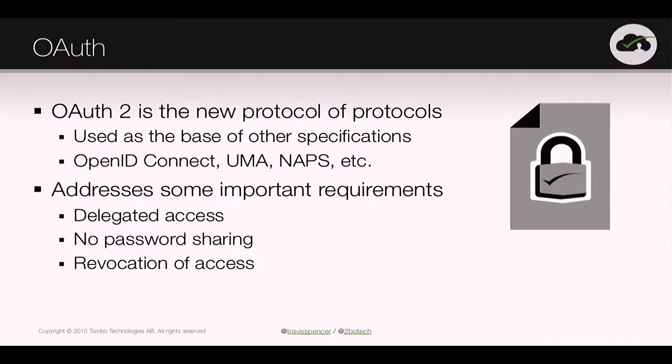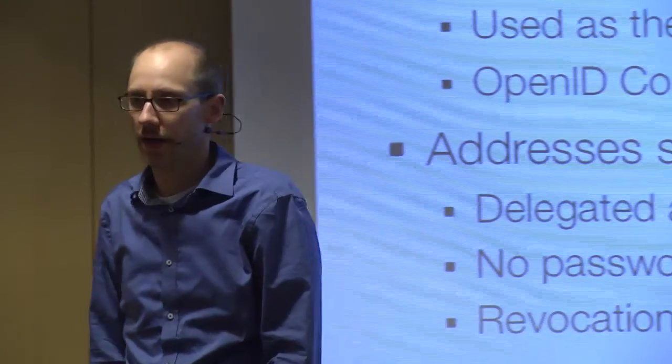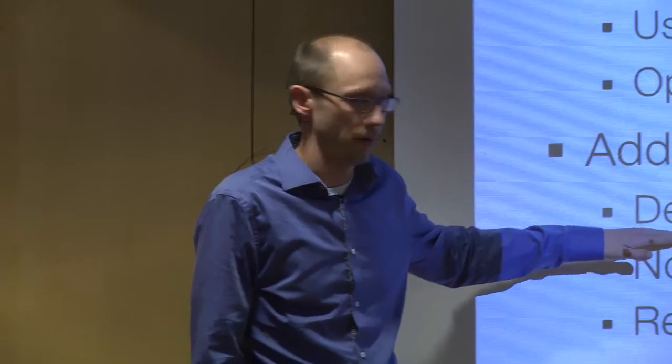I don't have time to go into all the layers in that stack, but I do want to unpack at least the first two — OAuth and OpenID Connect. OAuth 2 is a meta-protocol; it's a framework, a standard on which you can build other standards. It's very loose with a lot of different things inside it so it can serve as the basis on which we build those other standards — things like OpenID Connect, UMA, NAPS, TV Everywhere, and others. OAuth 2 is really designed to address fundamental requirements around delegated access.